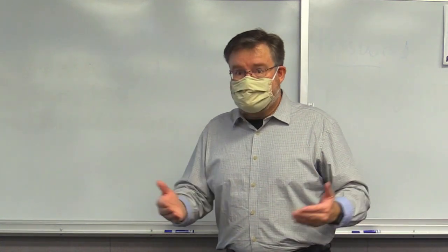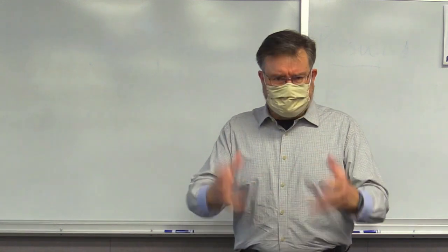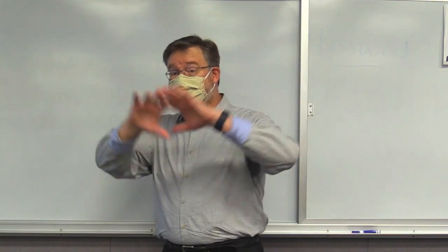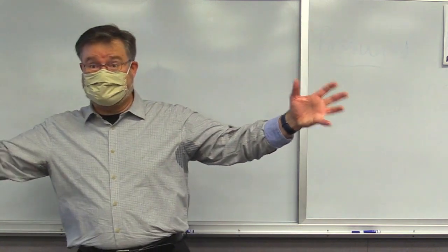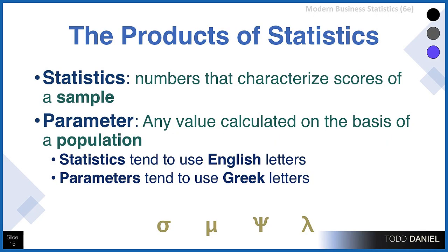We need a different word to describe statistics that come from the population. When we survey a sample, we call those numbers statistics. But when those same numbers — the mean, the standard deviation — apply to a census of an entire population, those are called parameters. The easiest way to tell them apart: statistics tend to use English letters, parameters tend to use Greek letters. The mean of a sample is M; the mean of the population is the Greek letter mu. Standard deviation of a sample is SD or S; the Greek equivalent is sigma.